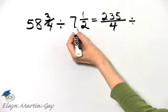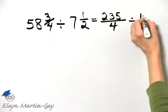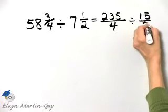Divided by seven and one-half. Two times seven is fourteen, plus one is fifteen, over two.